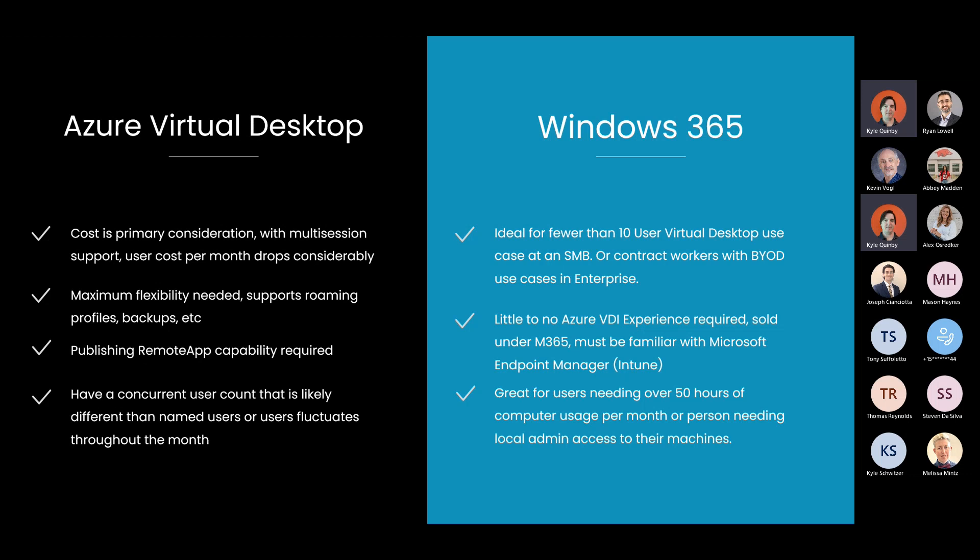For publishing remote apps, if your requirement is to publish applications and not necessarily a full desktop, then AVD would definitely be the area to look at. And if you have a concurrent user count that is different from named users, or if users fluctuate throughout the month with variable demand on your system, then AVD is going to be a better tool for the job. Windows 365 is a per-user fixed license cost, so it's not great for trying to dynamically save money.